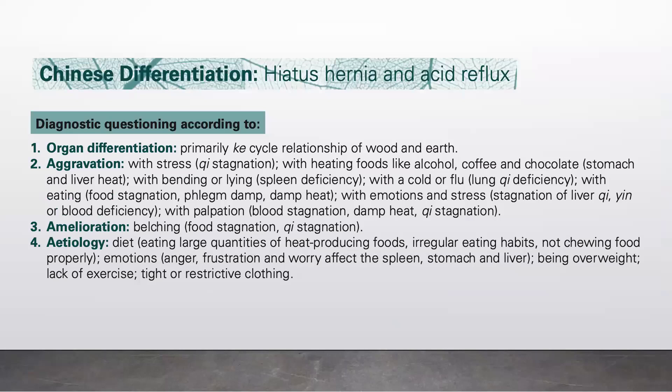If hiatus hernia occurs with heating foods like alcohol, coffee, and chocolate, this is stomach and liver heat. Hiatus hernia with bending or lying down indicates spleen deficiency. If the condition occurs with a cold or flu, this is lung chi deficiency. With eating: food stagnation, phlegm damp, or damp heat. With emotions and stress: stagnation of liver chi, yin deficiency, or blood deficiency.